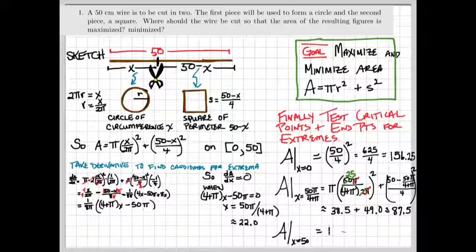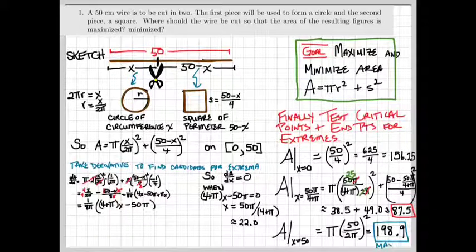And then finally, when x equaled 50, that means the entire wire is being made into a circle, we get 198.9 as the maximum area. So you can see that the maximum, the largest output occurred here at 198, giving us an area of 198.9, and the minimum occurred with the cut in the middle at about 22 centimeters. That's giving 87.5 centimeters squared.